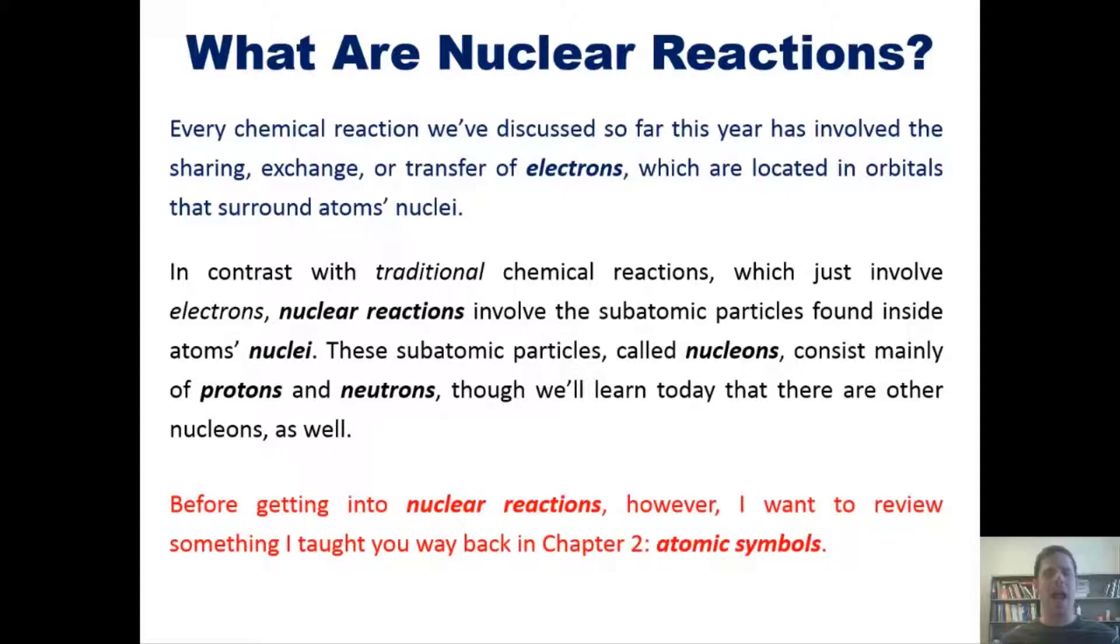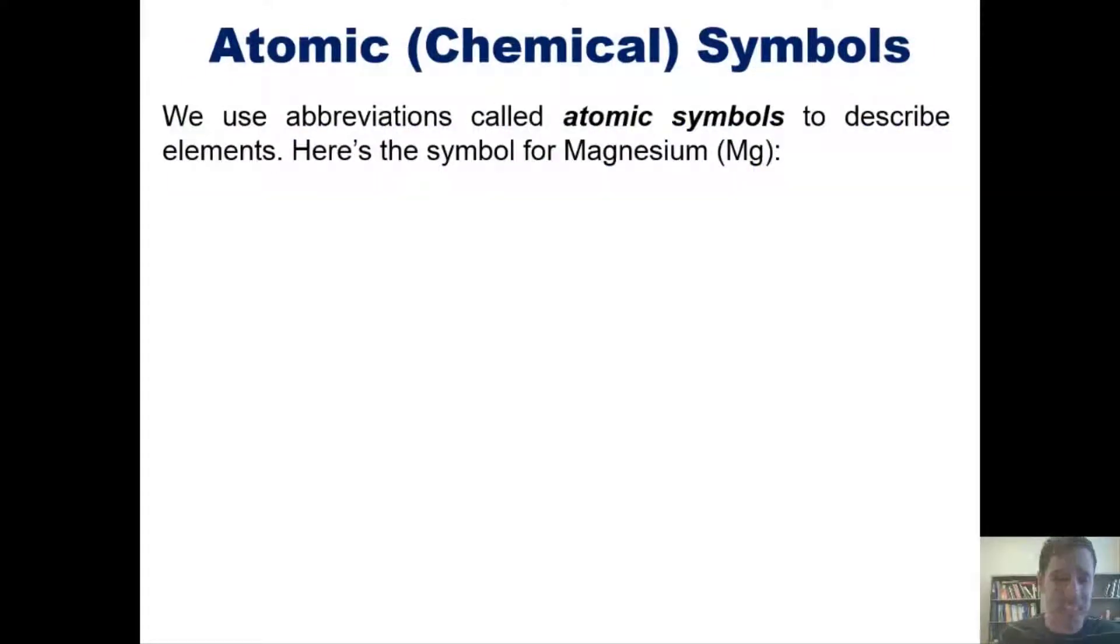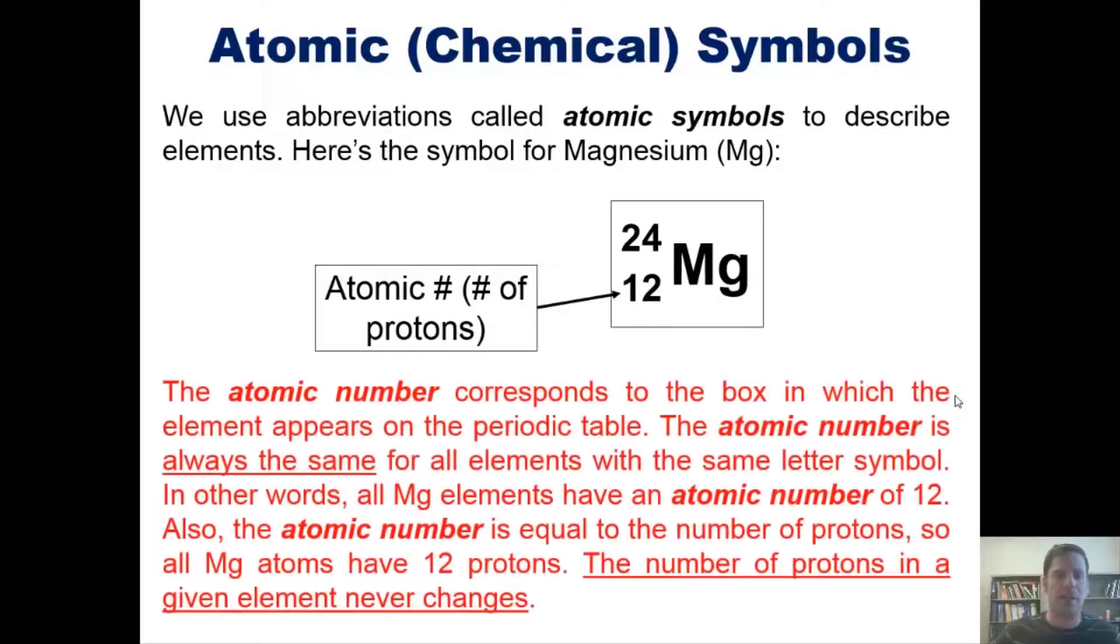Before getting into nuclear reactions, I want to review something from chapter two about atomic symbols. We use abbreviations called atomic symbols to describe elements. Here is the symbol for magnesium. The atomic number, this 12 in the lower left-hand corner, corresponds to the box in which this element appears on the periodic table. This atomic number is always the same for all elements that have the same letter symbol. All magnesium atoms have an atomic number of 12.